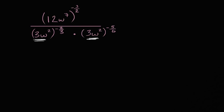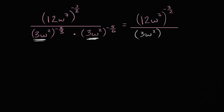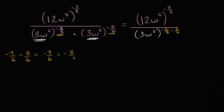So this is going to equal our numerator — we can just rewrite it as 12w to the seventh power — over our denominator, which we can write as this base, 3w squared, and we can add these two exponents: negative 2/3 plus negative 5/6. Negative 2/3 is the same thing as negative 4/6, minus 5/6, which equals negative 9/6, which is equal to negative 3/2. So this right over here is the same thing as negative 3/2 power.